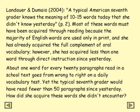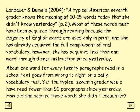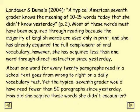A typical American 7th grader knows the meaning of 10 to 15 words today that she didn't know yesterday. Most of these words must have been acquired through reading, because she already has a full oral vocabulary. However, she's acquired less than one word through direct instruction since yesterday. About one word for every 20 paragraphs read in a school text goes from wrong to right on a daily vocabulary test, yet the typical 7th grader would have read fewer than 50 paragraphs since yesterday. So how did she acquire all those words she didn't encounter in the text?